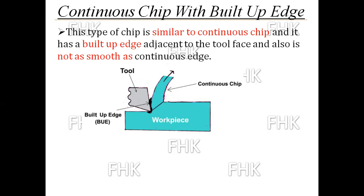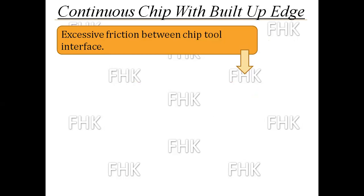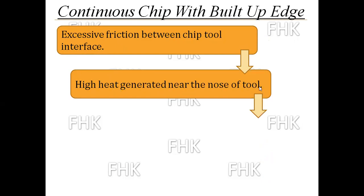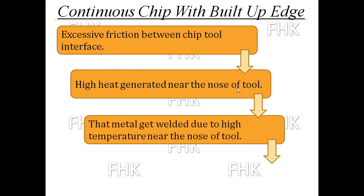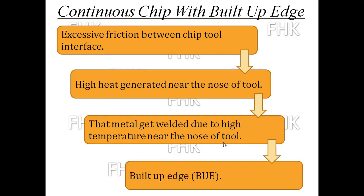Let us see how the built-up edge is formed. First, when excessive friction between the chip and tool interface takes place, high heat is generated near the nose of the tool. Due to this high heat, the metal gets welded near the nose of the tool. The material being removed sticks to the nose of the tool and gets welded due to the high temperature created by friction, forming the built-up edge, which is not desired during cutting.